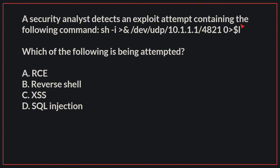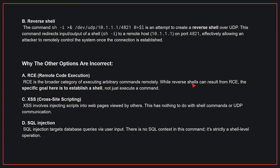A security analyst detects an exploit attempt containing the following command. Which of the following is being attempted? The correct answer is B. Reverse shell. This command is an attempt to create a reverse shell over UDP. This command redirects input/output of a shell to a remote host on port 4821, effectively allowing an attacker to remotely control the system once the connection is established. Why the other options are incorrect? A. RCE. RCE is the broader category of executing arbitrary commands remotely. While reverse shells can result from RCE, the specific goal here is to establish a shell, not just execute a command. C. Cross-site scripting. Cross-site scripting involves injecting scripts into web pages viewed by others. This has nothing to do with shell commands or UDP communication. D. SQL injection. SQL injection targets database queries via user input. There is no SQL context in this command. It's strictly a shell-level operation. Therefore, the correct answer is B.